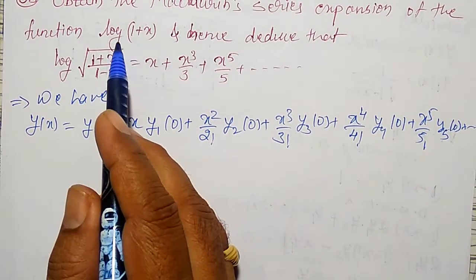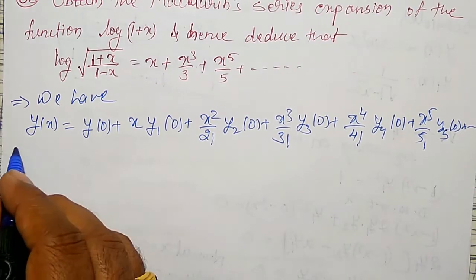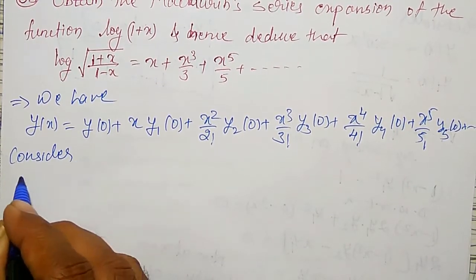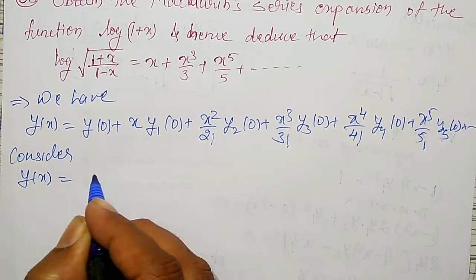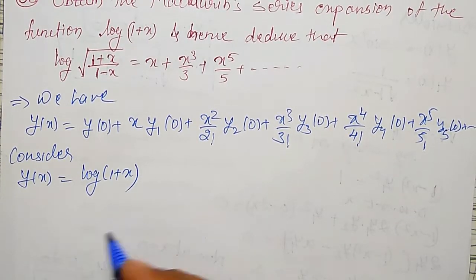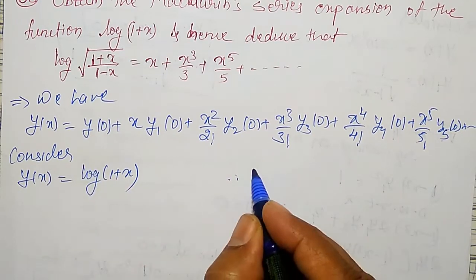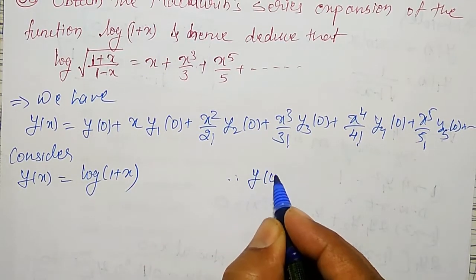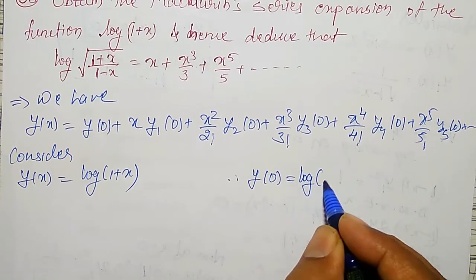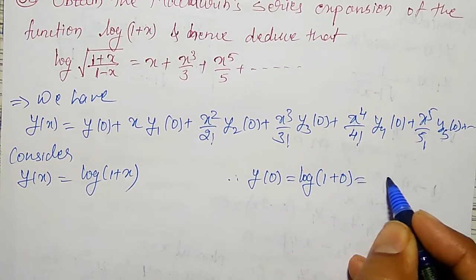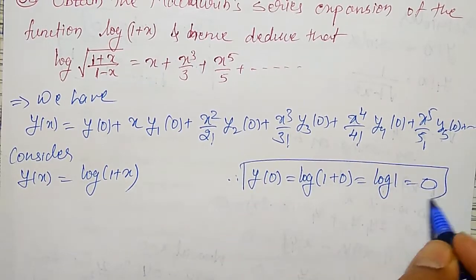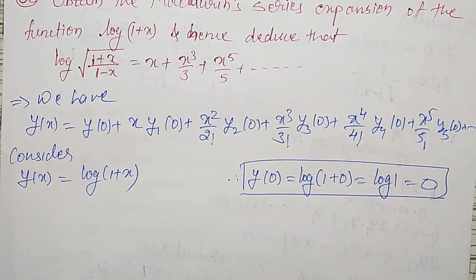For that, let me consider log(1 + x) first. Consider y(x) = log(1 + x). Therefore, y(0) = log(1 + 0) = log(1) = 0. So my y(0) is 0.